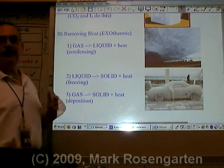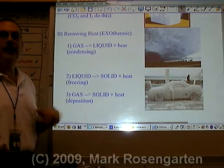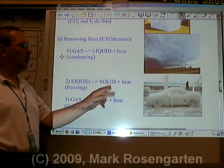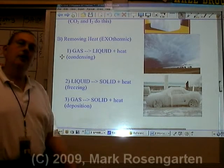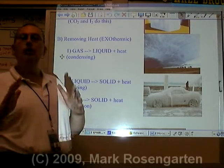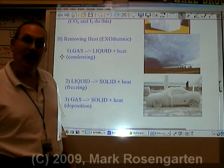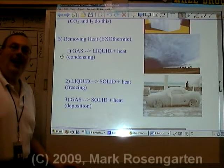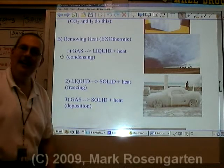On the other hand, if you remove heat, that's exothermic. Taking a gas and removing heat turns it into a liquid — that's called condensing, which is what happens when clouds form. Taking a liquid and removing heat turns it into a solid, like what happens in your freezer: heat flows from the water into the freezer, and as the water loses its heat, it freezes and turns into a solid. Turning a gas directly into a solid also requires removing heat — this is called deposition. Dry ice does this: you can cool gaseous carbon dioxide enough to turn it back into a solid.